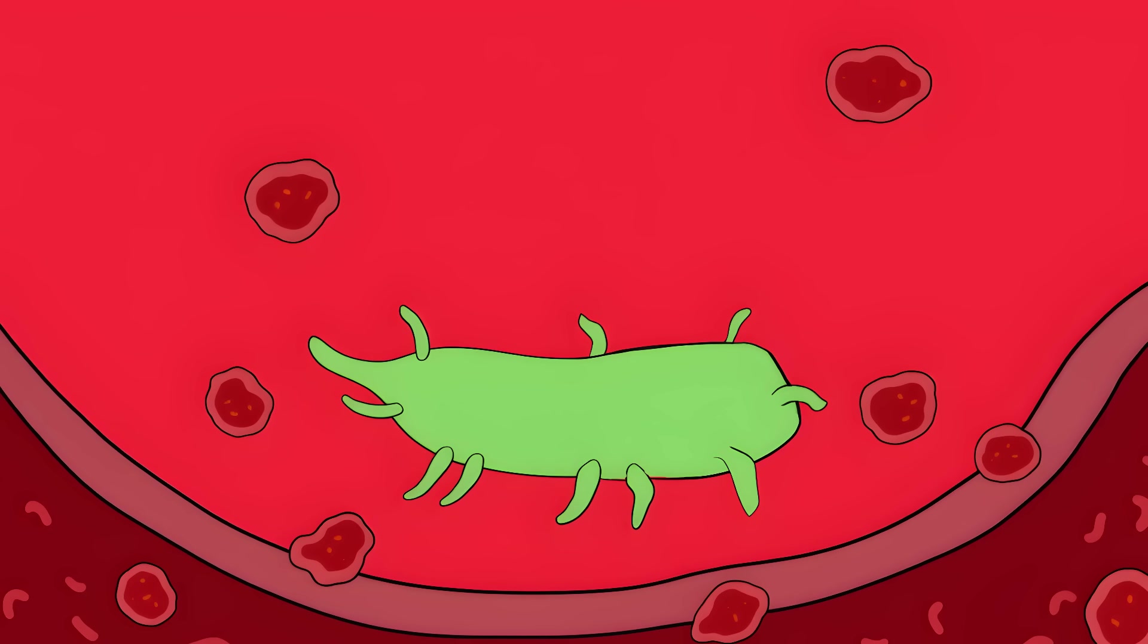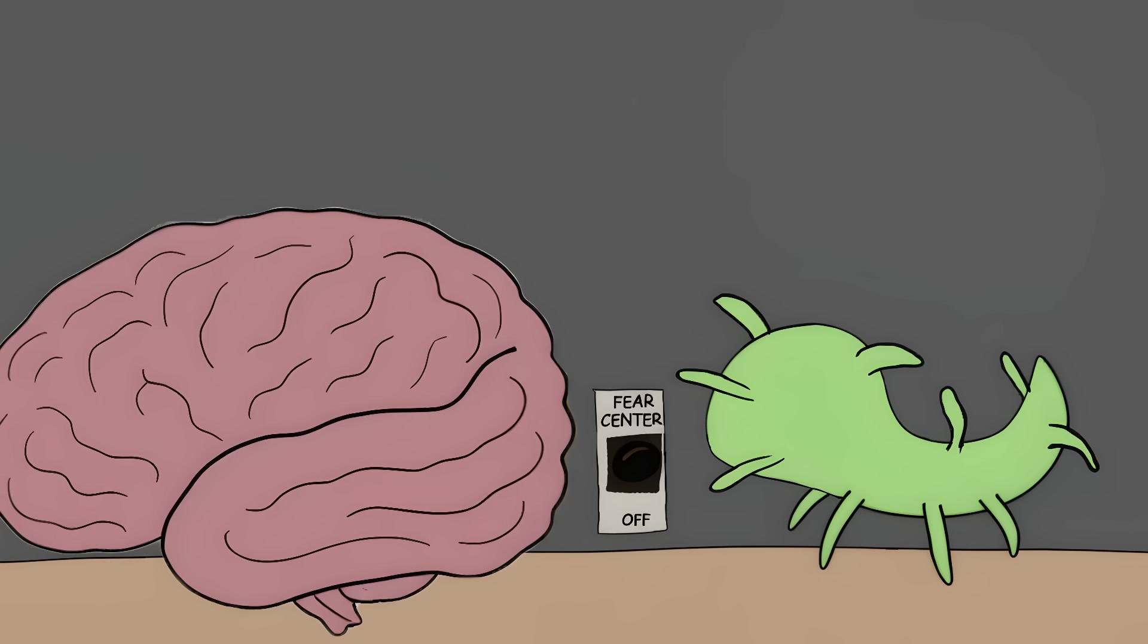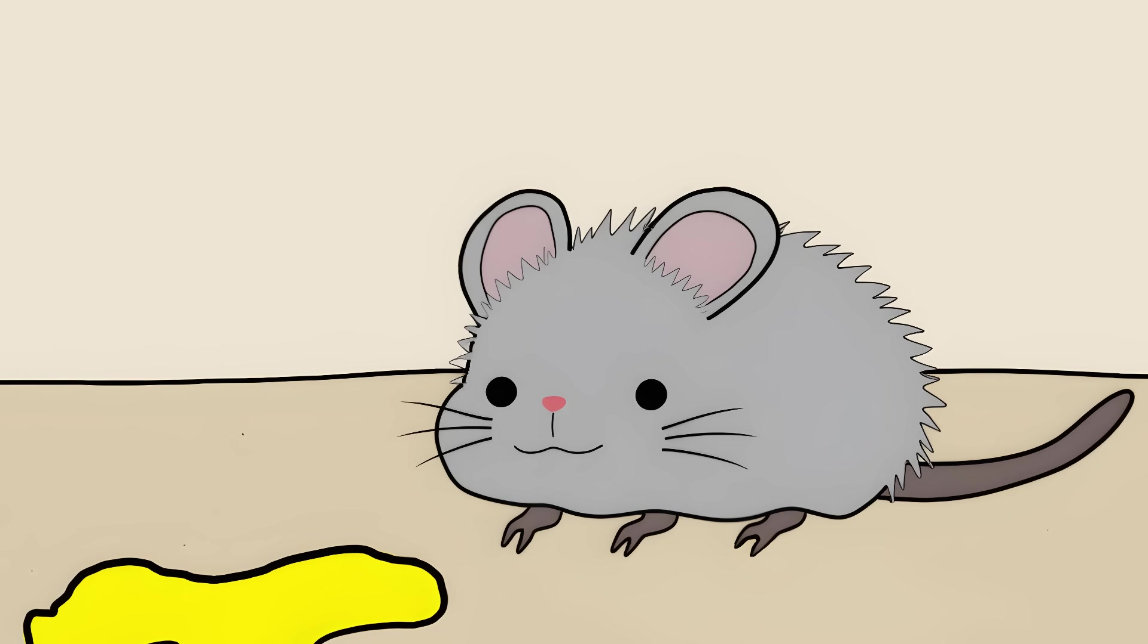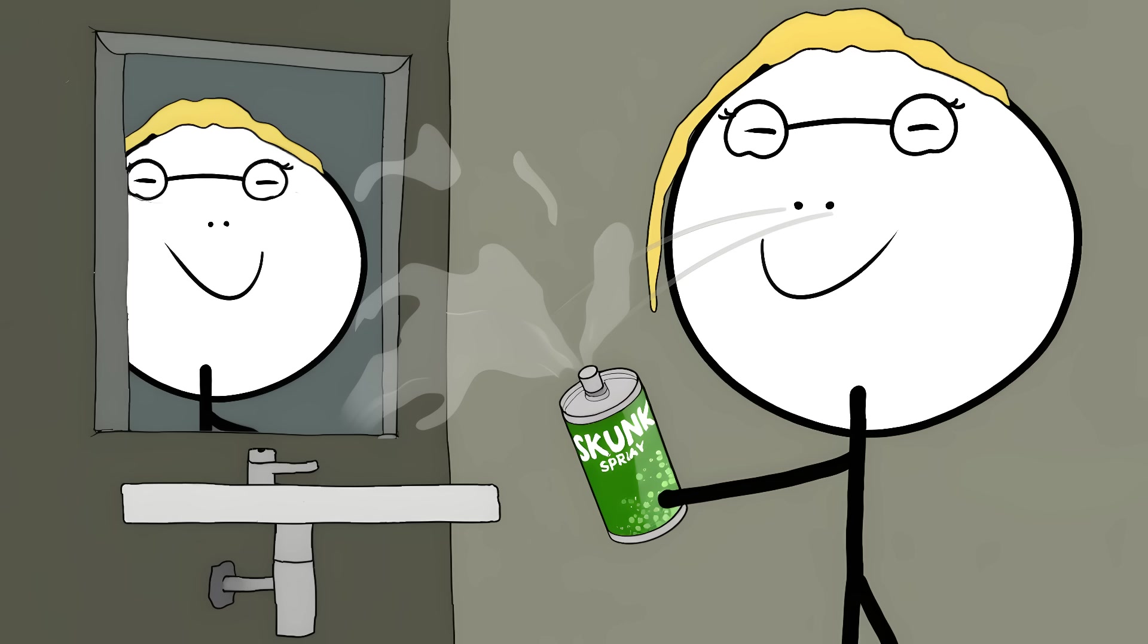Once inside a mouse, it travels through the blood and sets up camp in the brain. It targets the fear center and shuts it down like flipping off a light switch. Not only that, it makes mice attracted to cat urine. That's like someone reprogramming you to think skunk spray is cologne.